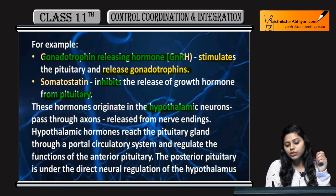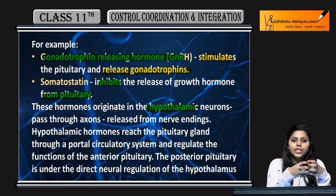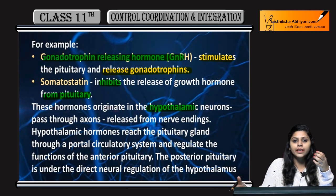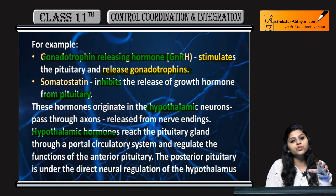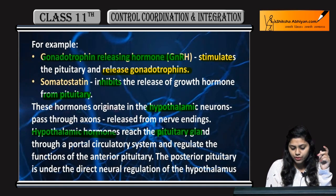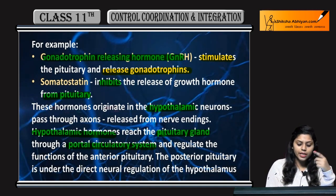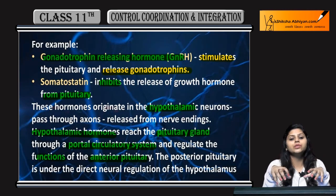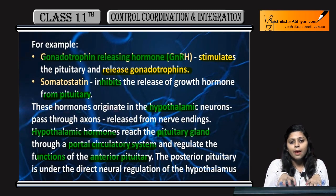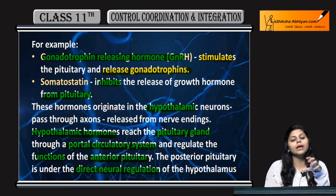These hormones originate in the hypothalamic neurons. They originate from the axons and stimulate the next cell or response. Hypothalamic hormones reach the pituitary gland through a portal circulatory system, where they regulate the function of the anterior pituitary. The posterior pituitary, however, is under the direct neural regulation of the hypothalamus.